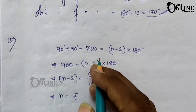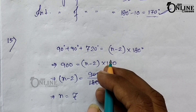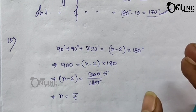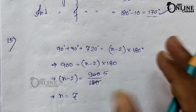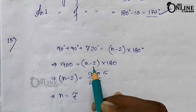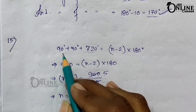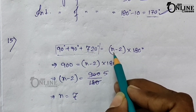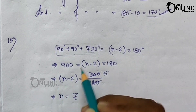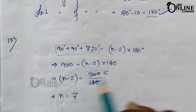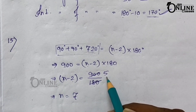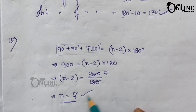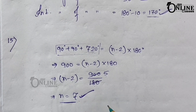Problem number fifteen: two interior angles of a polygon are right angles and the sum of the remaining angles is 720°. So the total sum of interior angles = 90° + 90° + 720° = 900°. Using the formula (n − 2) × 180° = 900°, we get n − 2 = 5, so n = 7. The polygon has 7 sides.